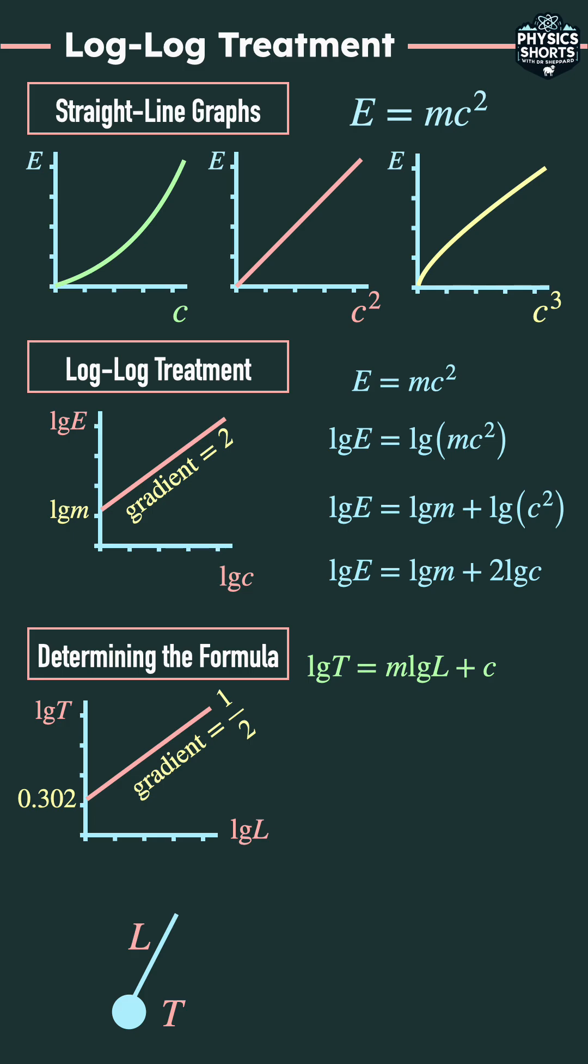Log T equals M log L plus C. So log T equals a half log L plus 0.302.